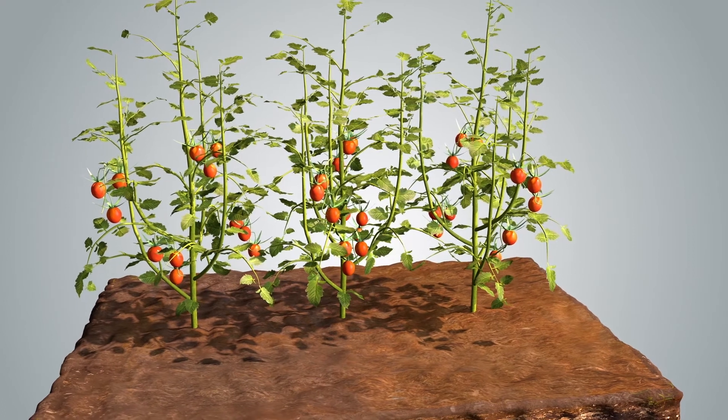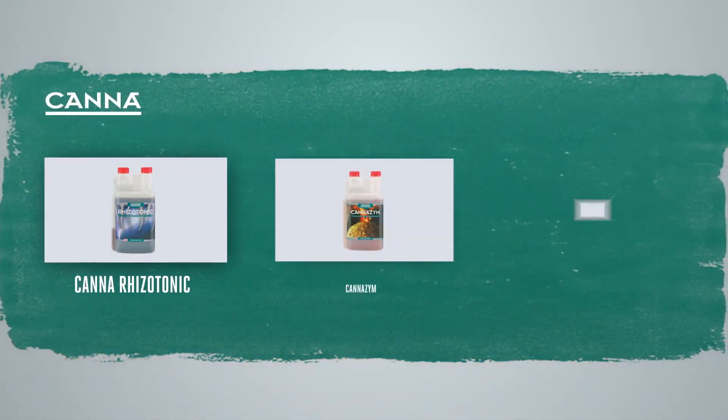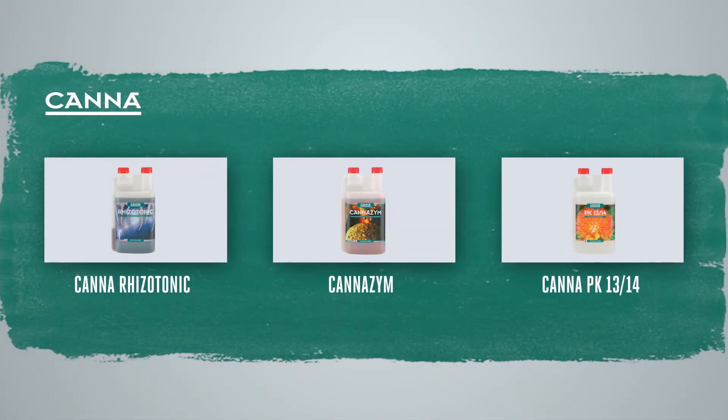Using Canna Boost correctly will give you optimum results every time. We also have other additives you can use alongside Canna Boost to get more from your plant. Don't forget to use Canna Rhizotonic, Cannazym, and Canna PK 13-14 during the flowering phase for even better yields.